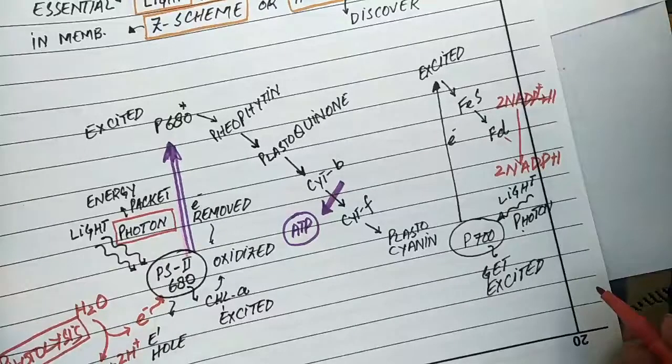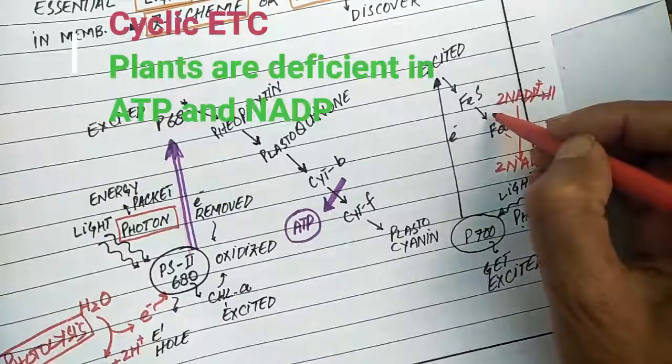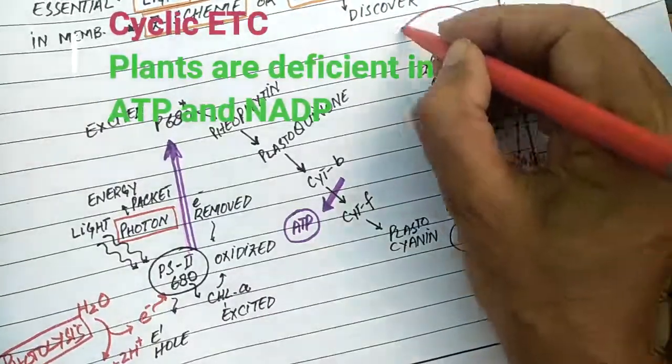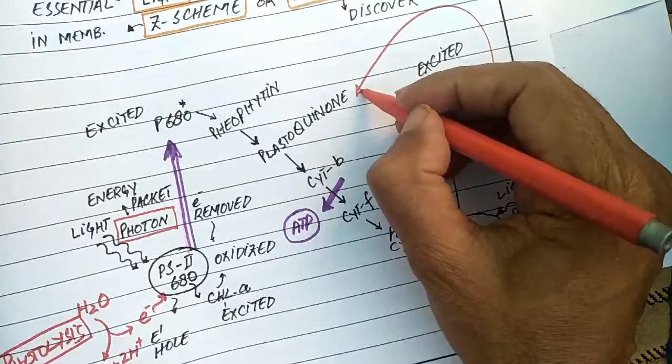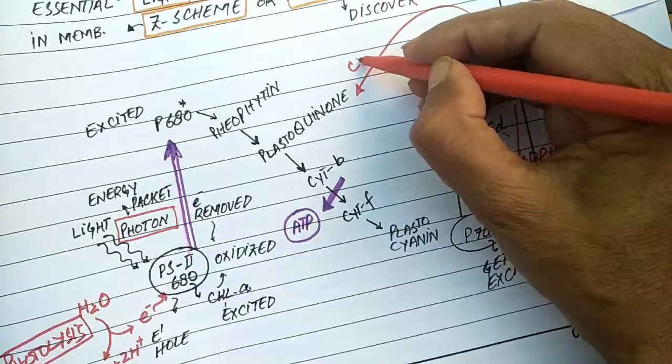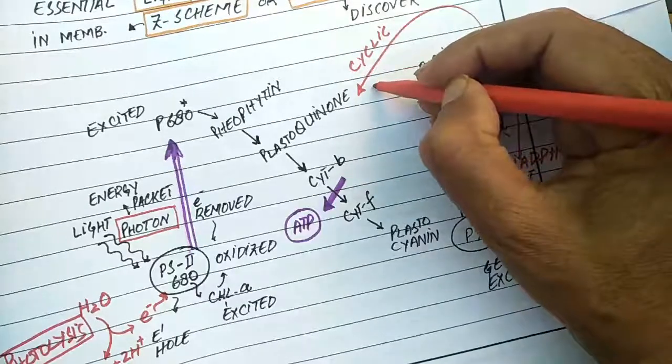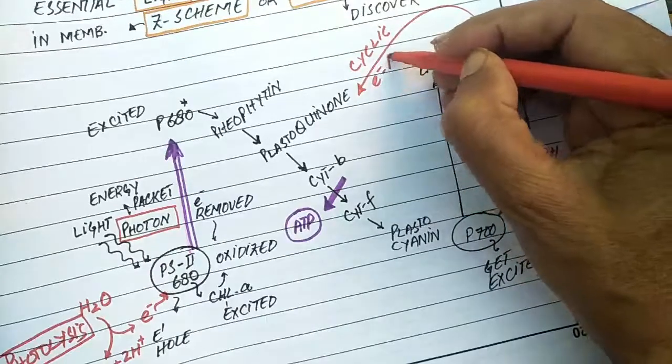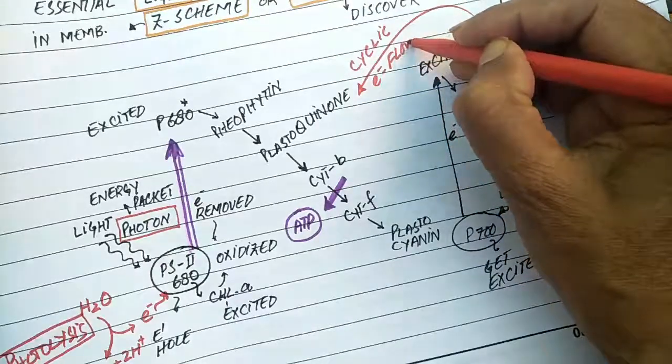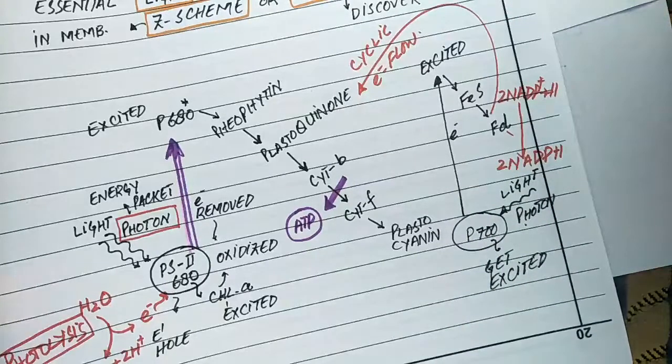However, sometimes plants may be deficient in ATP or NADP may be unavailable. In these cases, electrons may reverse back from ferredoxin to plastocyanin and cycle between photosystem I, ferredoxin, and back to plastocyanin. This is called cyclic electron flow.